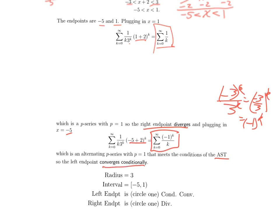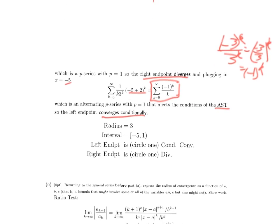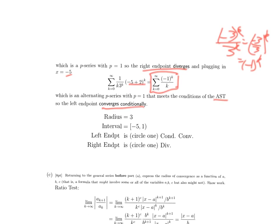If we plug in minus 5, we get minus 3 to the k over 3 to the k. That becomes minus 1 to the k, which is an alternating sign. You get minus 1 to the k over k — that is the alternating harmonic series. We know its positive version, 1 over k, diverges. But by the alternating series test, 1 over k goes to zero and is decreasing, so the left endpoint converges conditionally. Like every other problem we've done, the left and right endpoints are exactly the same except for a factor of minus 1 to the k.